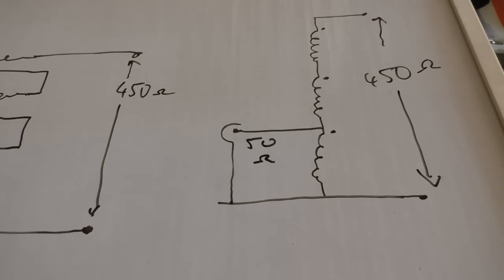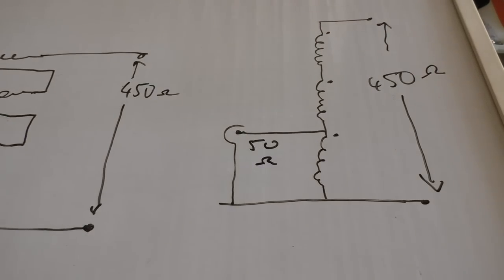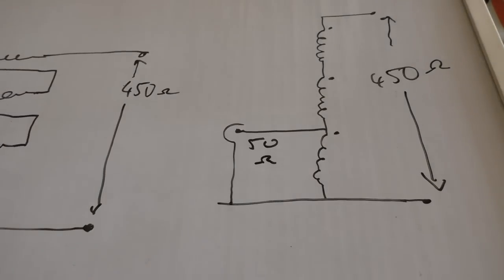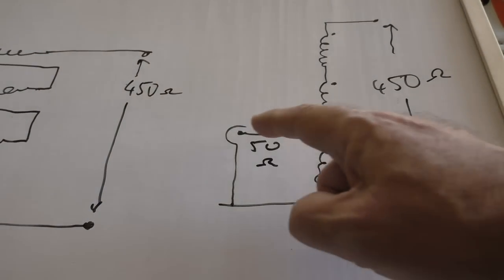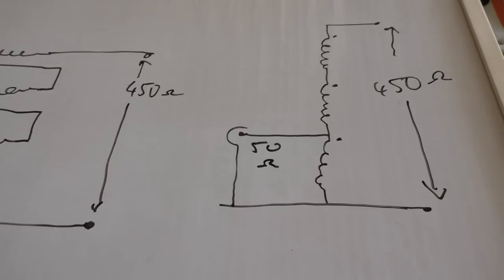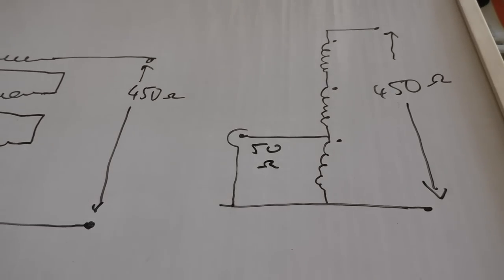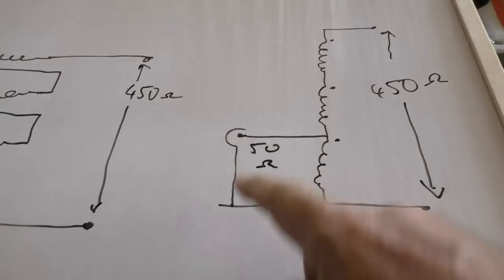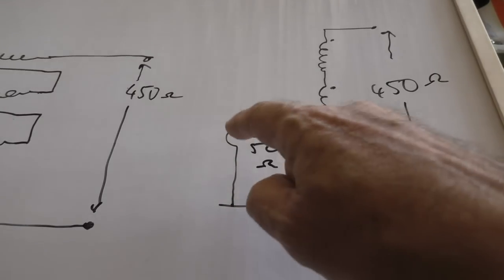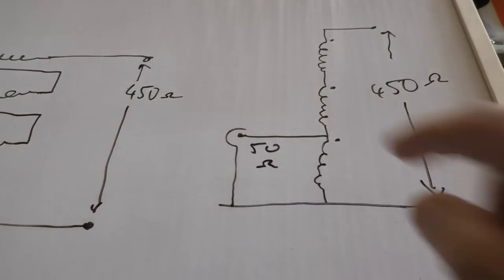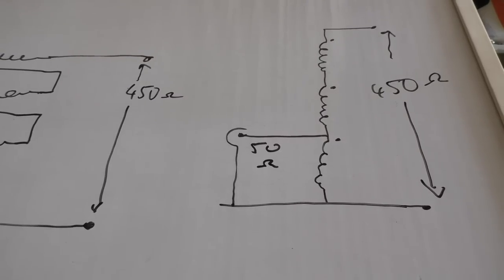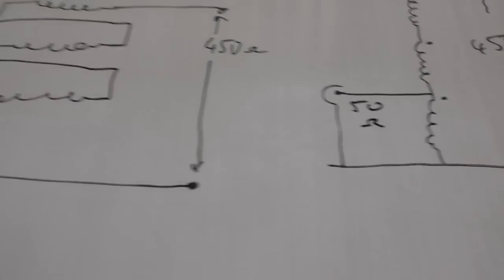Now this is a 9 to 1 un-un. If you wanted to make a 9 to 1 balun, all you would do is swap these two connections over. So the inner would go there and the outer goes there. And then you've got a 9 to 1 balun.